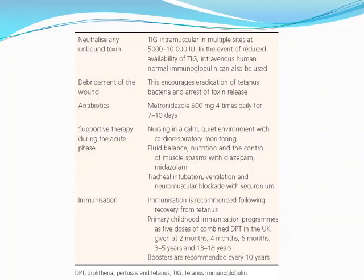When we receive the patient, we must neutralize unbound toxin by giving tetanus immunoglobulin — 5,000 to 10,000 international units intramuscularly in multiple sites. If TIG is unavailable, intravenous human normal immunoglobulin can also be used. Debridement of the wound should also be done to arrest further toxin release. The antibiotic of choice is metronidazole for 7 to 10 days to kill the bacteria.